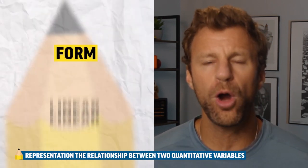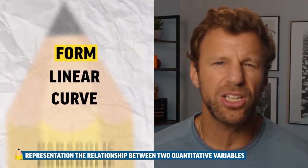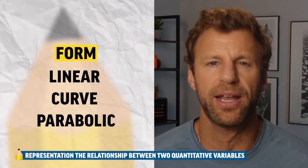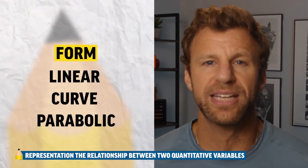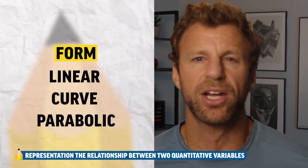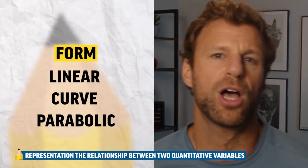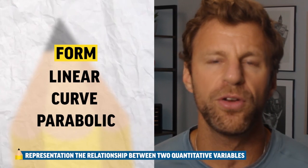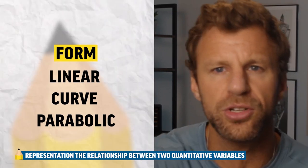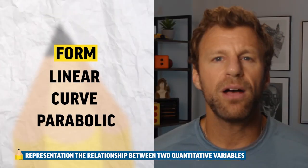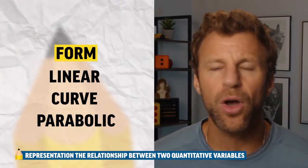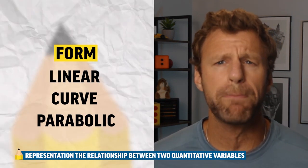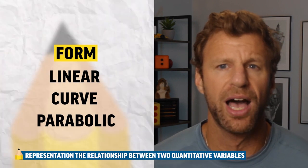Next up, we have the form. The form is basically which shape or what form you see those dots on the scatterplot creating. A very common form that we see is linear. We could also see a giant curve, whether it be a logarithmic curve, an exponential curve, or a parabolic curve — which goes up and then back down. You're never going to see a perfect relationship in the real world, so don't ever expect to see a perfect curve or a perfect straight line.